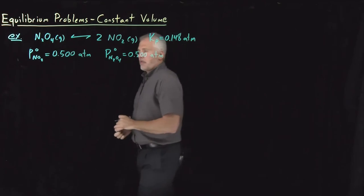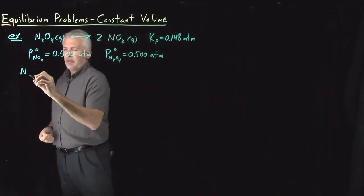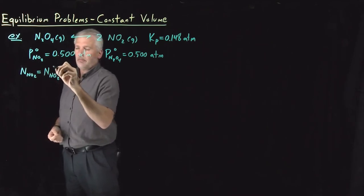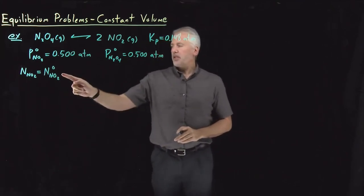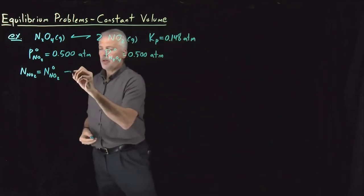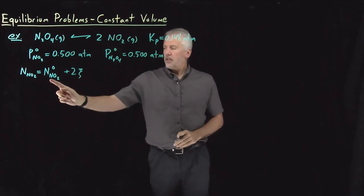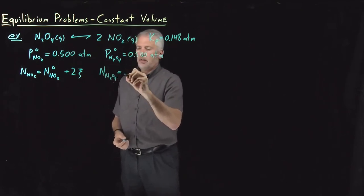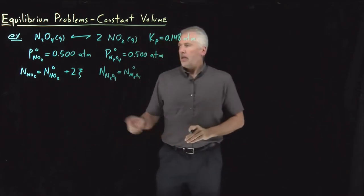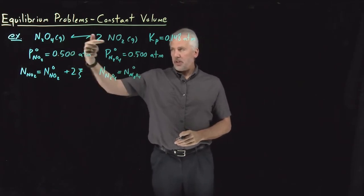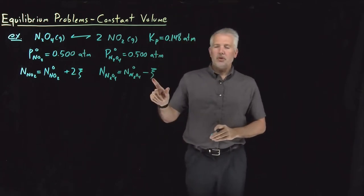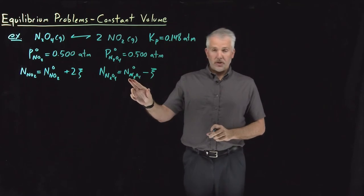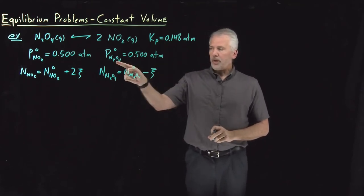So the way we'll solve that problem is the way we've considered before. We can start by talking about moles or molecules and the extent of reaction. So however many molecules of NO2 I have at the beginning, when this reaction proceeds in the forward direction, I create two molecules of NO2 every time the reaction happens. So the number of molecules of NO2 is the initial amount plus twice the extent of reaction.